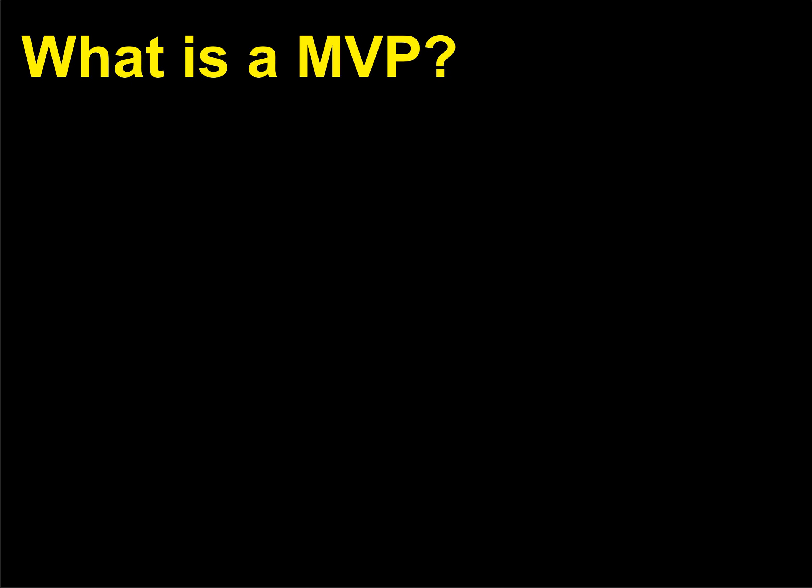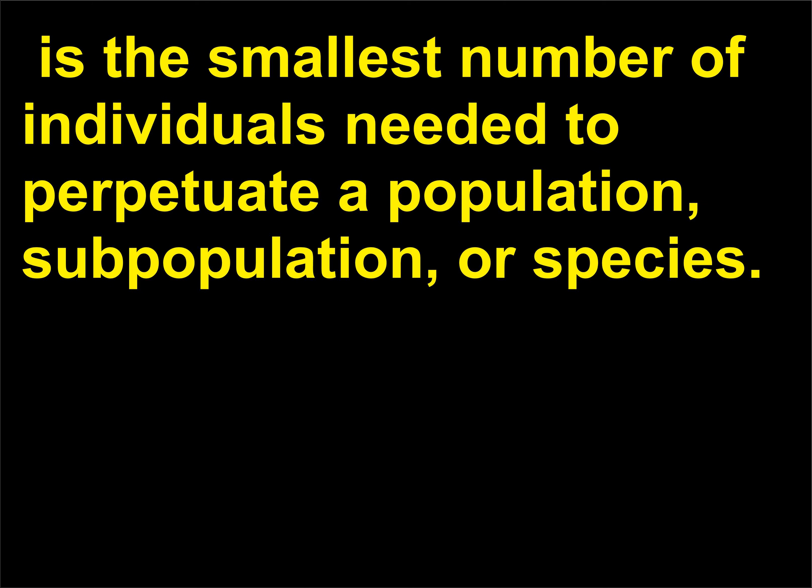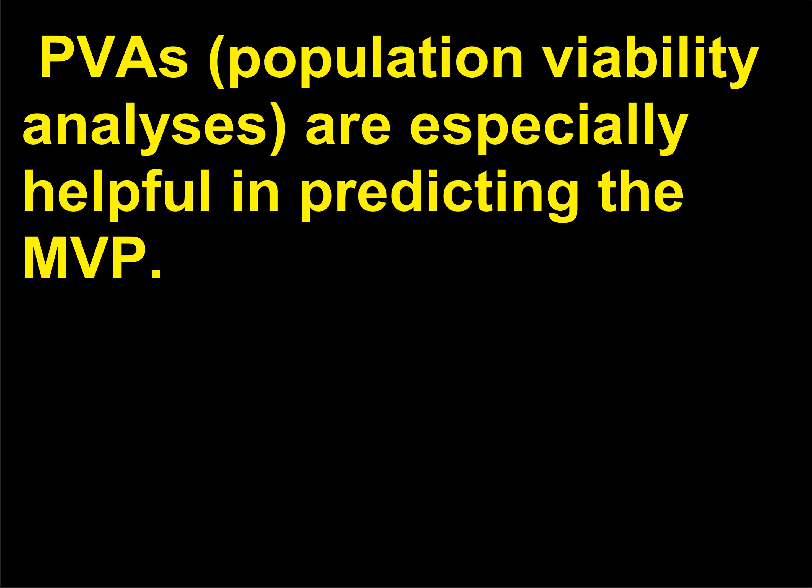What is an MVP? The MVP, or minimum viable population size, is the smallest number of individuals needed to perpetuate a population, subpopulation, or species. Population viability analyses (PVAs) are especially helpful in predicting the MVP.